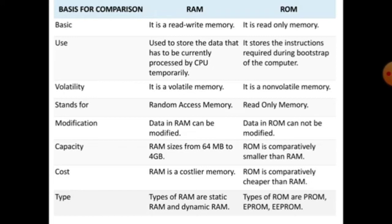The cost - RAM is a costlier memory, RAM is very expensive. ROM is comparatively cheaper than RAM, ROM is lesser in price. Type - types of RAM are static RAM and dynamic RAM. RAM has two types: static RAM and dynamic RAM, whereas ROM has different types like ROM, PROM, EPROM, and EEPROM.